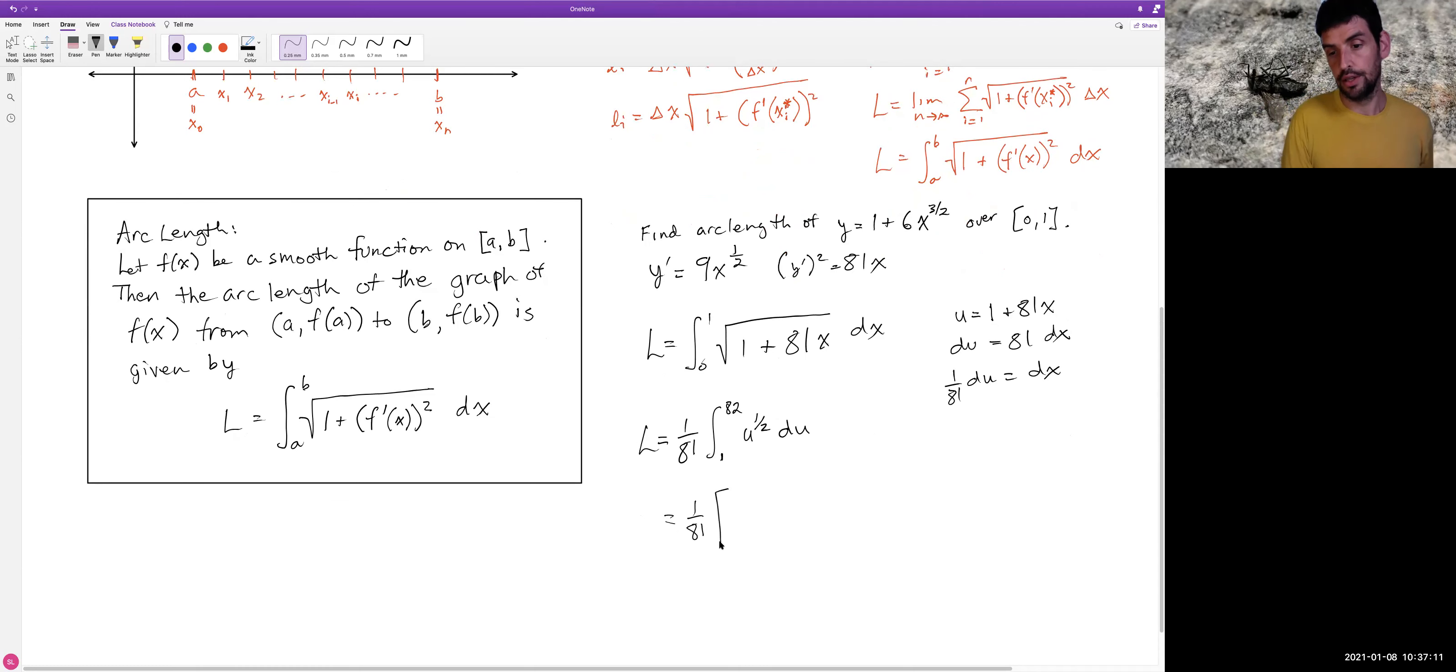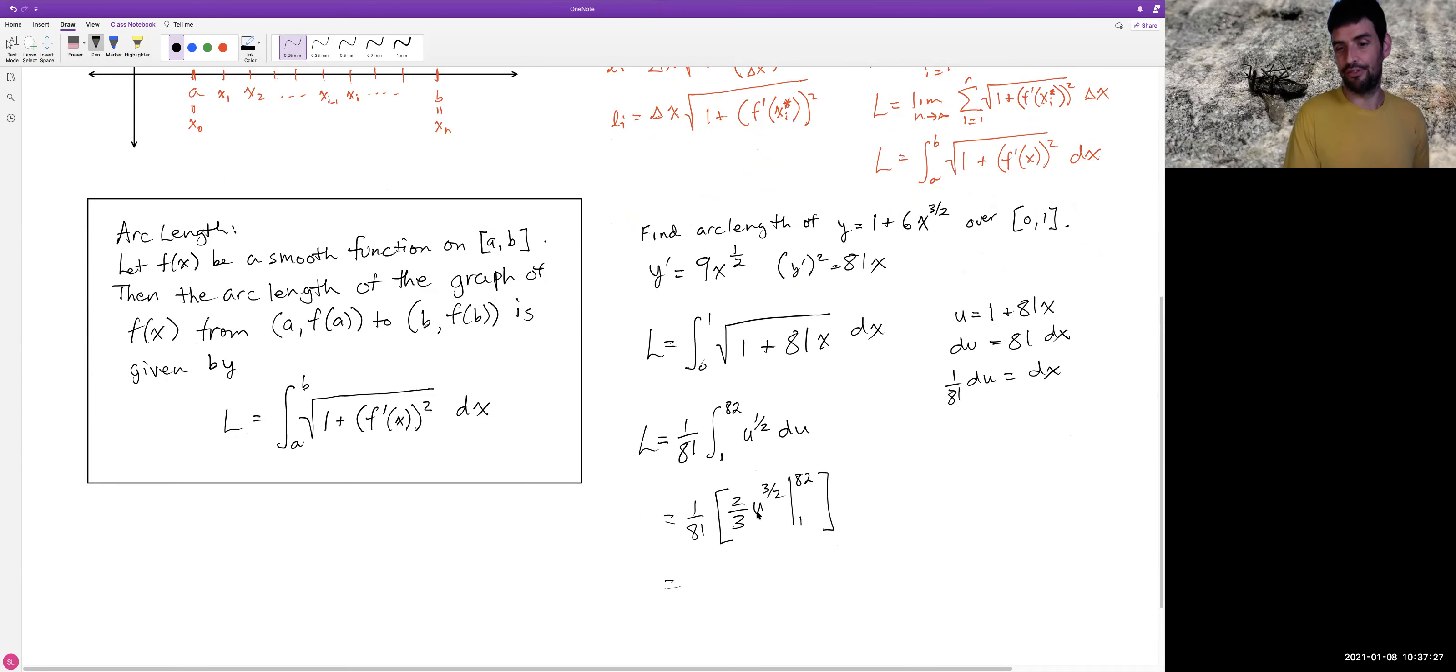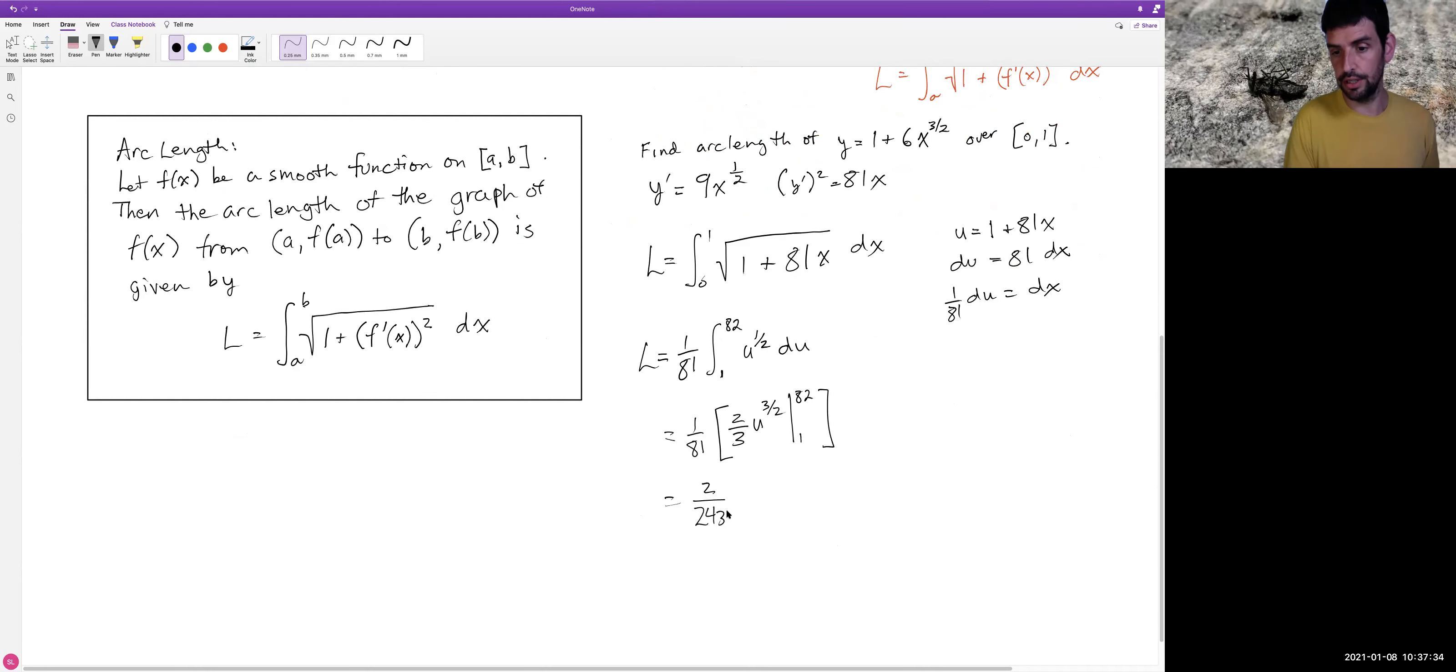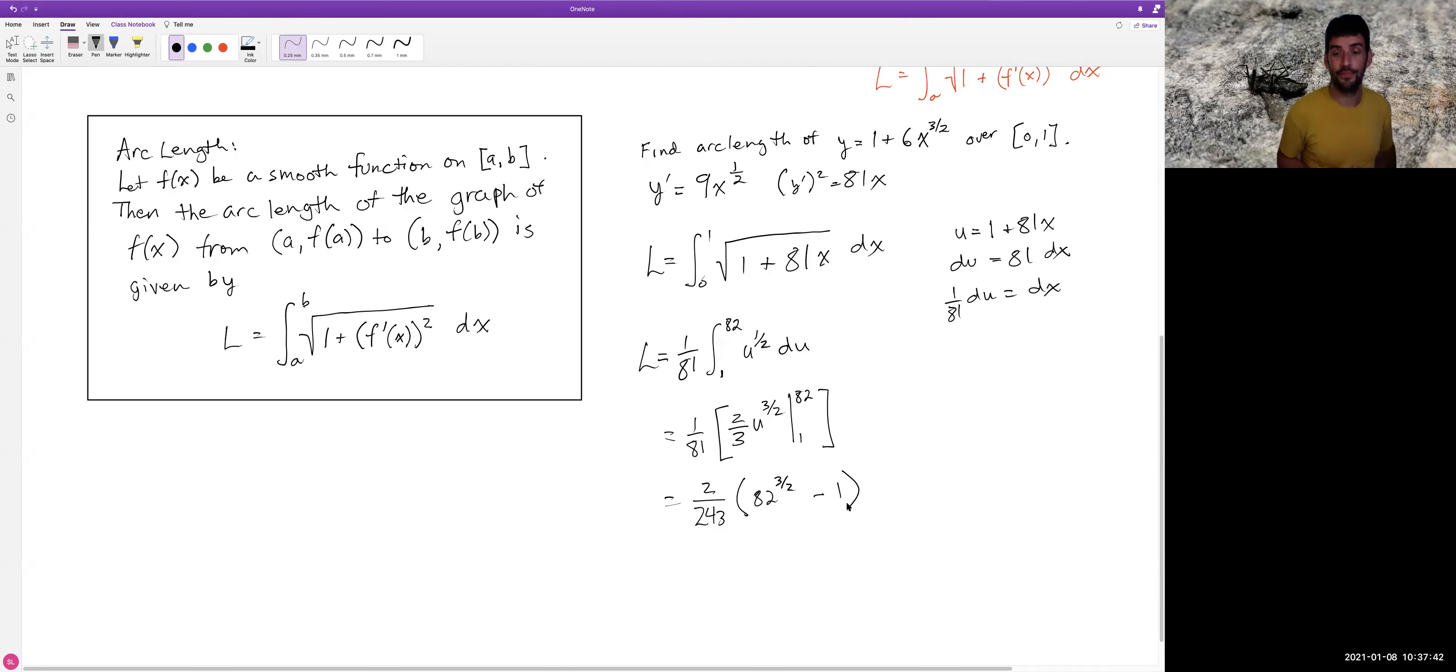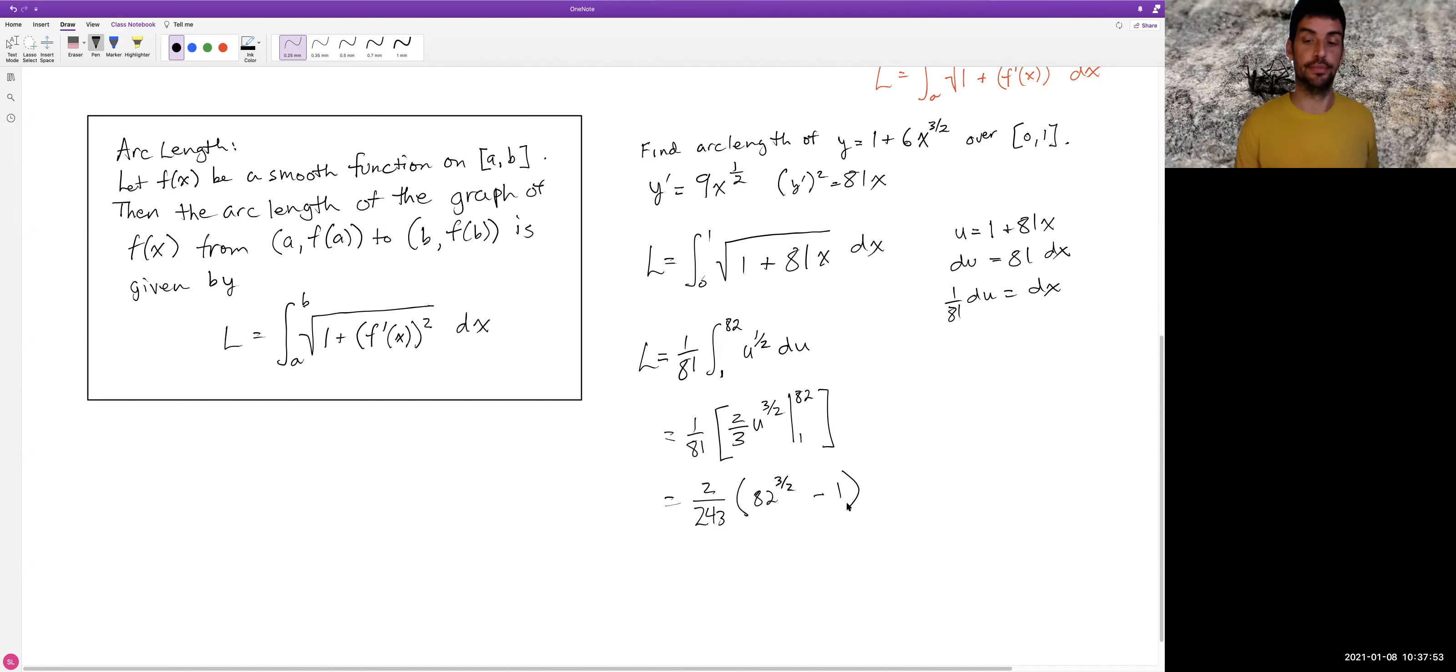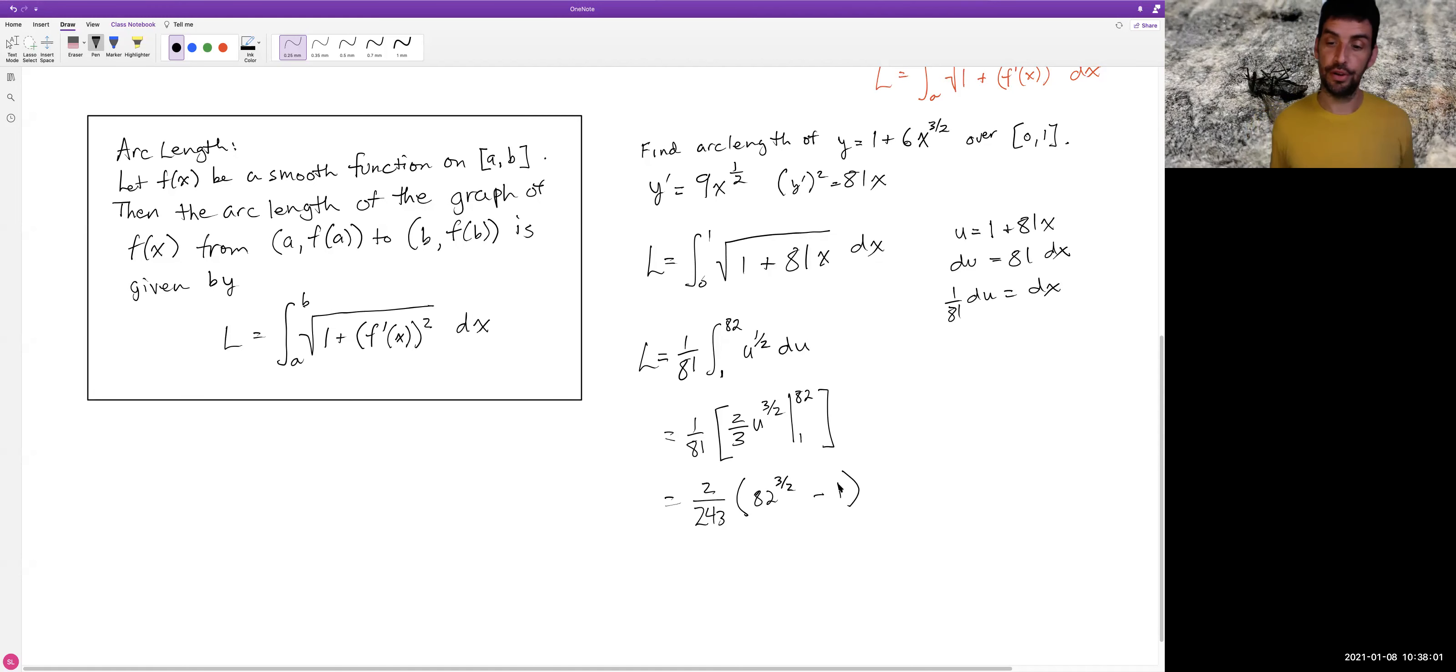I can factor the constant two thirds out, combine that with the one over 81. I get 2 over 243. And I've got 82 to the three halves minus 1. And that's a perfectly reasonable answer. If we want to, we can punch that into a calculator. I'm going to leave it as is, the most precise way I can think to write this number down. So I'll leave it like this. That is the arc length, this number, 2 over 243 times 82 to the three halves minus 1.